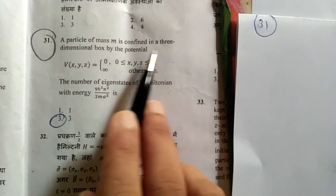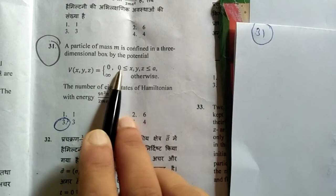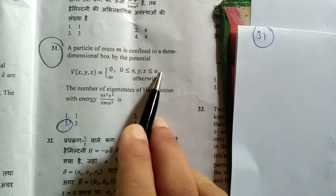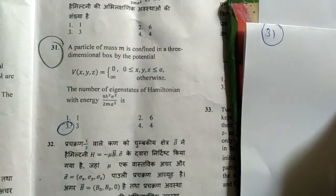A particle of mass m is confined in a three-dimensional box of potential 0 and infinity, where 0 is between 0 to a for the limits of x, y, and z. The energy eigenvalue of Hamiltonian is equal to